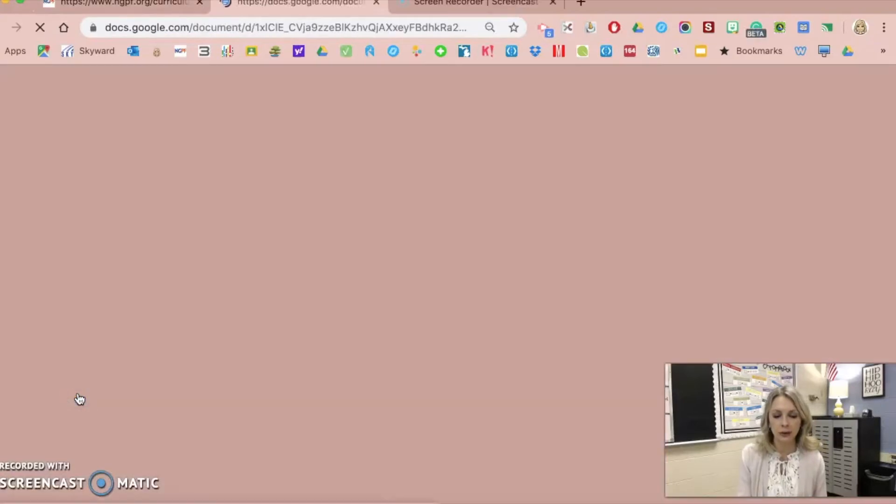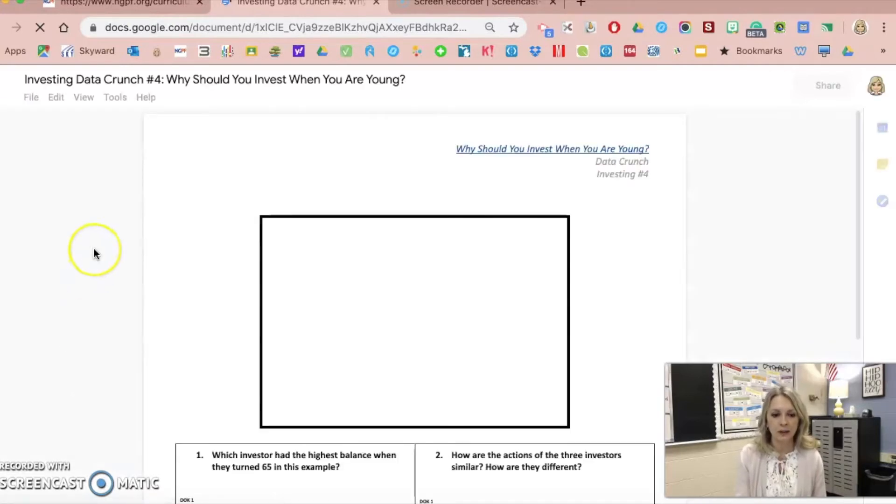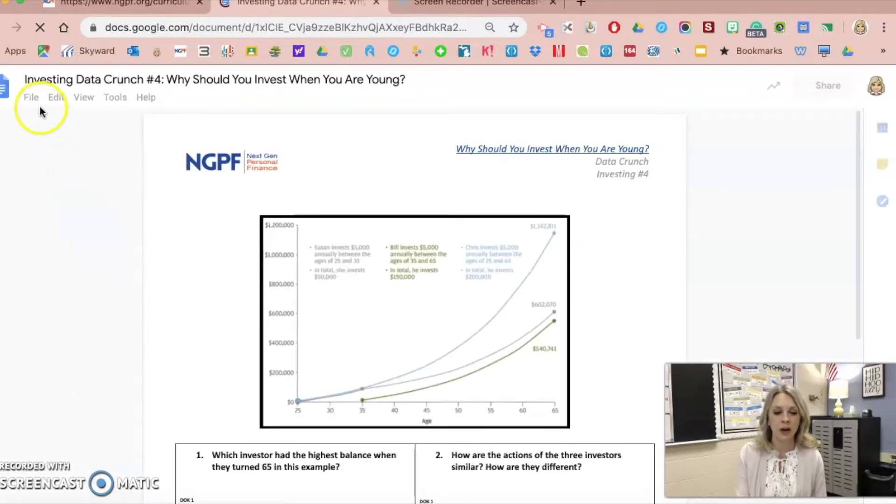I can view the Google Doc. Everything on the NGPF website is housed in Google, so you'll want a Google account of your own, and then you can print this off for students or you can file and make a copy of it to customize it for your own use in your classroom. Most often I print these out and put them on paper for students to analyze, but I've used data crunches in a bunch of different ways.